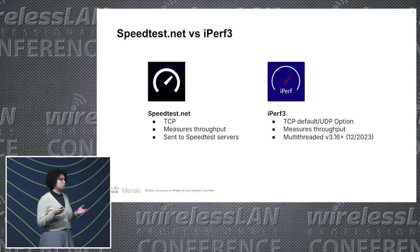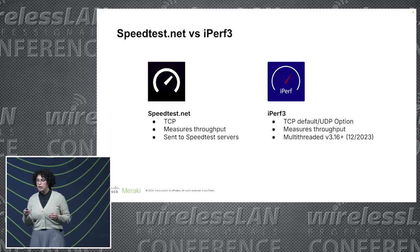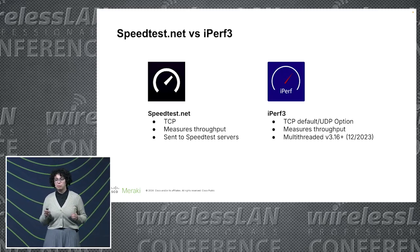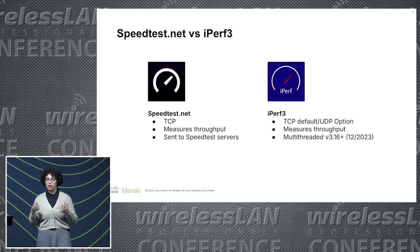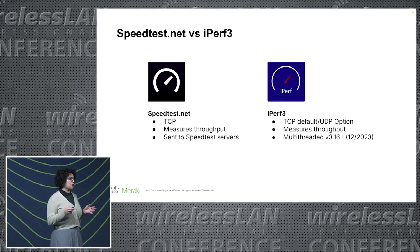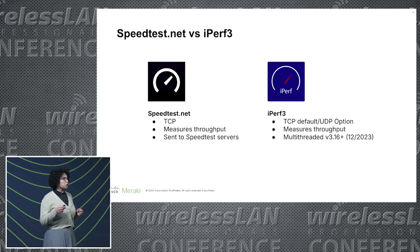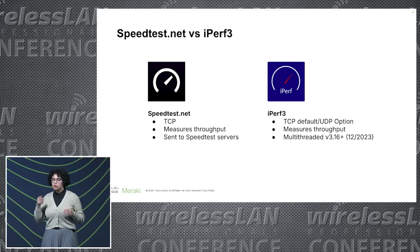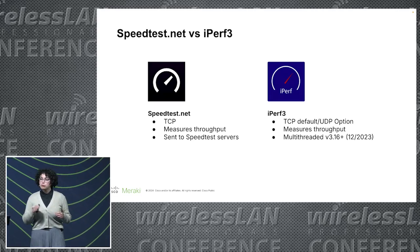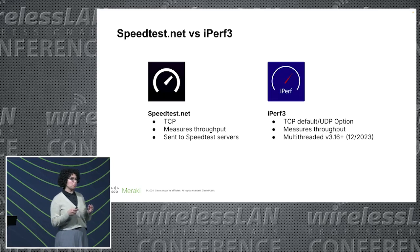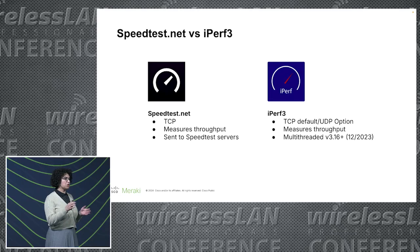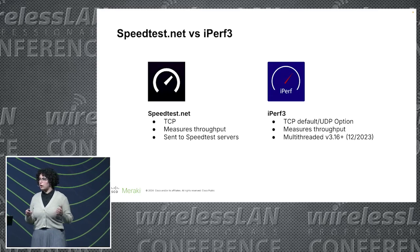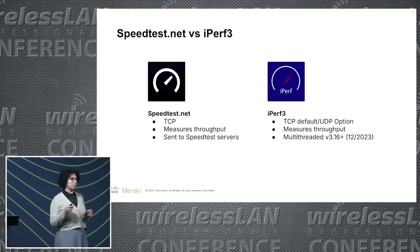iPerf3, on the other hand, is what most people use to do throughput testing locally on the LAN. It gives you the option to use UDP, but it'll be TCP by default — so if you need to test UDP specifically, you'll need to add that option. Additionally, there are some quirks with iPerf3: version 3.16 introduced multi-threading, so if you're using different versions you'll notice some performance differences. For Windows, I recommend using iPerf2.